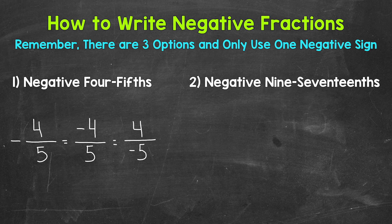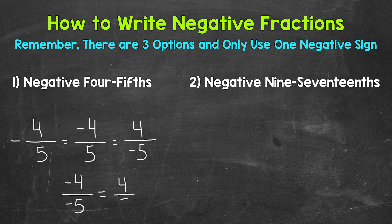Now remember, only use one negative sign. The one thing we can't do here is write negative four over negative five. Because fractions represent division, and when we have a negative divided by a negative, we get a positive. So this actually equals positive four-fifths and does not represent negative four-fifths. Three different options, and only use one negative sign.